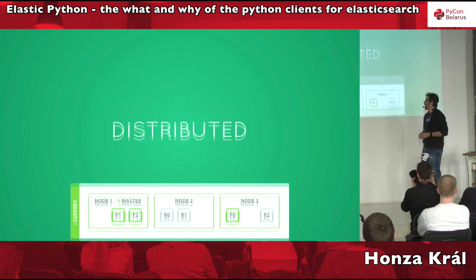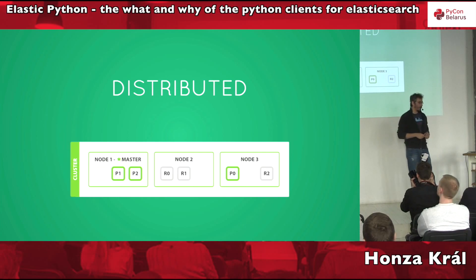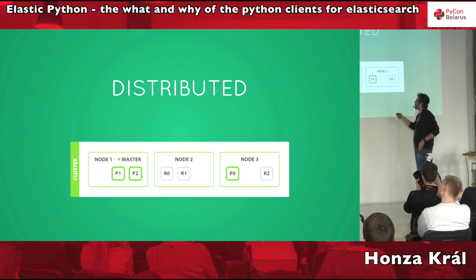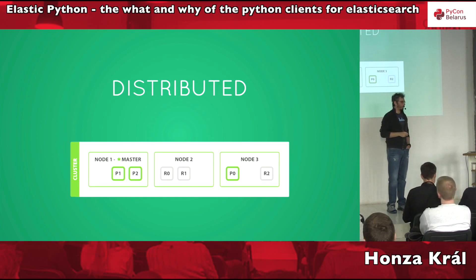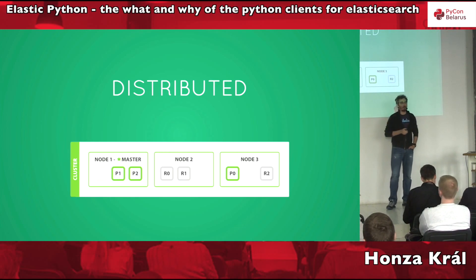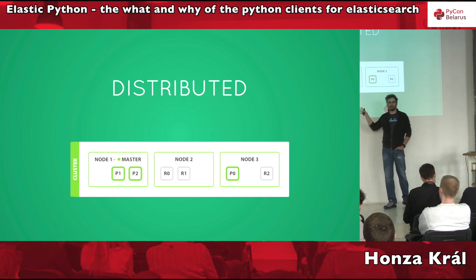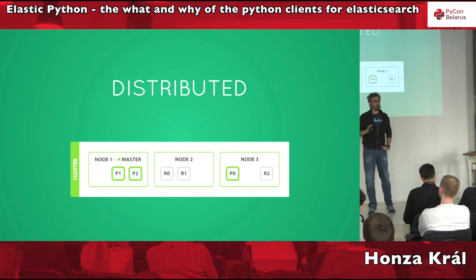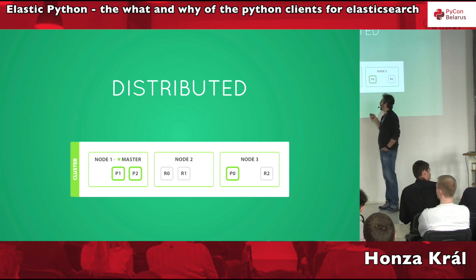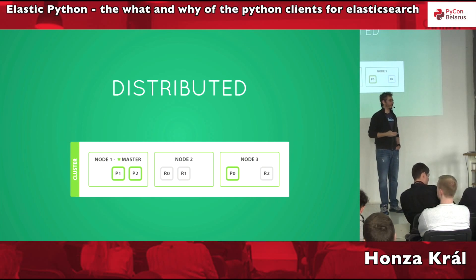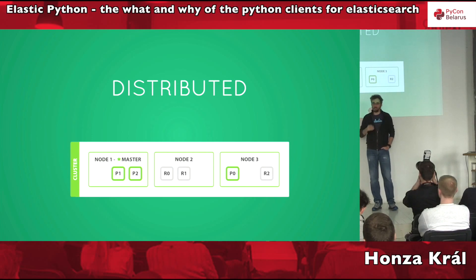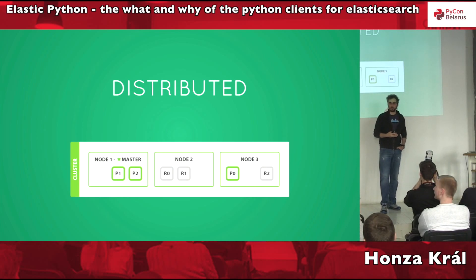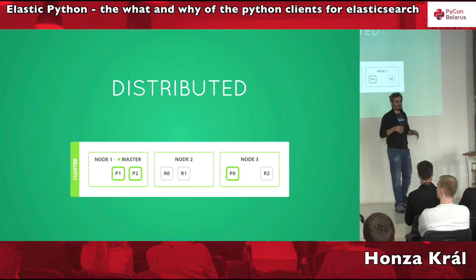Another big reason is that Elasticsearch is distributed — it can run on multiple machines. If you have three nodes and one goes down, does your application still work? Elasticsearch can handle that and won't lose any data. But if you use HTTP to talk to just one node, you might be susceptible to a failure. If that node goes down, your application is down even though Elasticsearch is still up. You could also be overloading one node, producing a hotspot in an otherwise distributed environment.